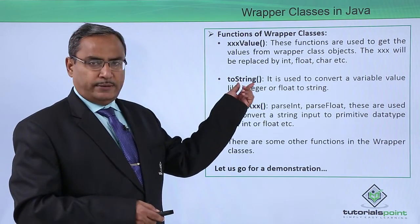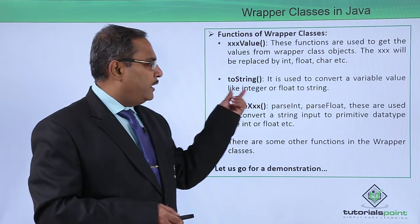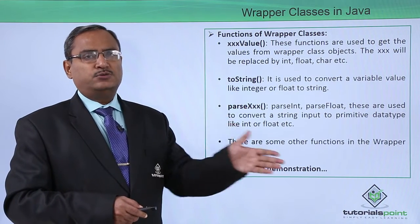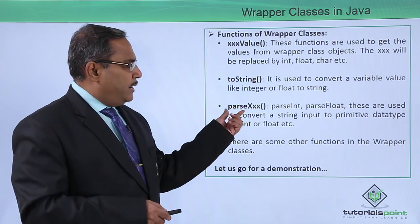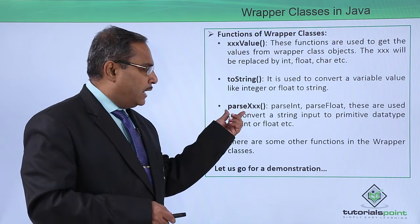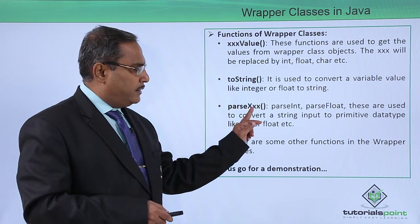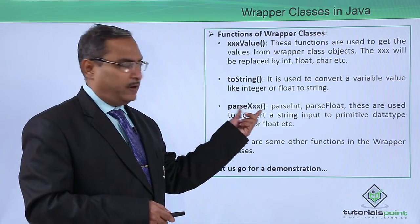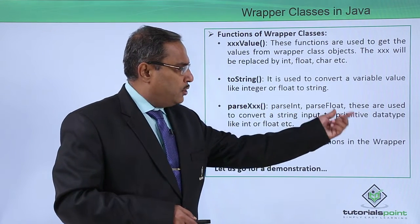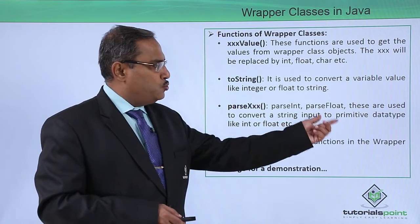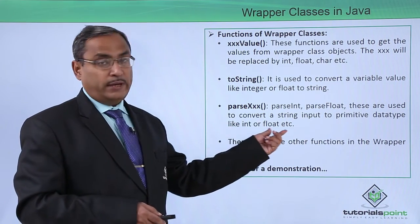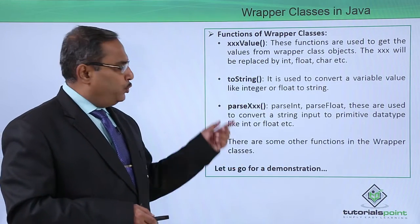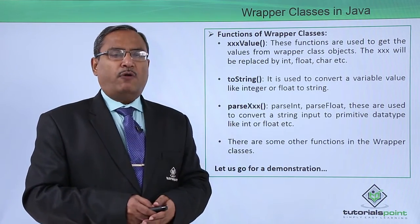Next, we have the toString method, which is used to convert a variable value like an integer or float to a string. Another function is parseXxx — for example, parseInt or parseFloat — these are used to convert a string input to a primitive type like int or float. There are some other functions in wrapper classes which will be discussed in the demonstration that follows.